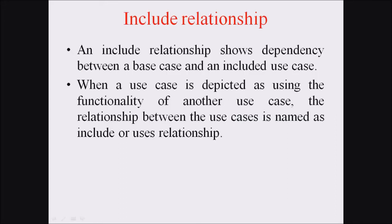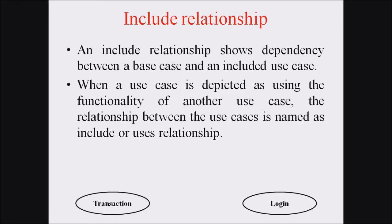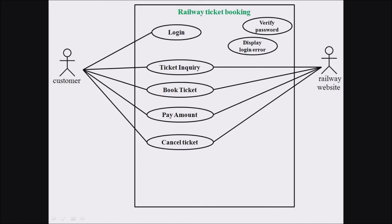An include relationship shows the dependency between a base case and an included case. When a use case uses the functionality of another use case, that relationship is named include. It is represented by two use cases connected with a dotted line. In our example, the login use case must include the verify password use case, meaning to complete login the verify password procedure must be included.